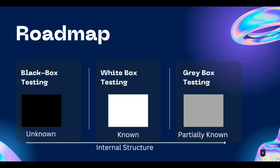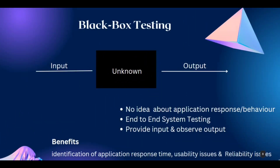Now we will understand each testing method one by one. Starting with black box testing: the tester gives input values without knowing the source code, internal architecture, or configurations of the application, and observes the output. The tester completely behaves like an end user. For example, let's suppose there is a newly launched e-commerce site and you are going to purchase some products from that website.